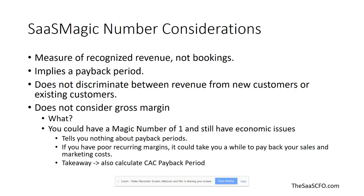Another important consideration is that the SAS magic number does not account for gross margin. Could you have a magic number of 1 and still have structural P&L and economic issues? The answer is yes, because it tells you nothing about your true payback periods when considering gross margin. If you have poor recurring margins, it could take much longer to pay back your sales and marketing costs — even if your magic number looks great. The key takeaway is to never look at a SAS metric in isolation. I'd recommend calculating the CAC payback period alongside the SAS magic number.